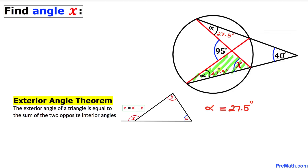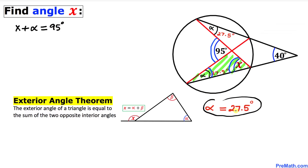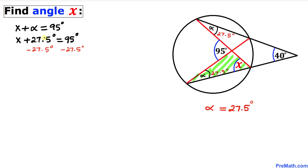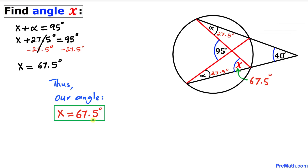Now let's focus on this shaded triangle. This angle is our exterior angle, equal to the sum of the two opposite interior angles alpha and x. Therefore we can write: x plus alpha equals 95 degrees. Since alpha is 27.5 degrees, we get x plus 27.5 degrees equals 95 degrees. Subtracting 27.5 degrees from both sides, x turns out to be 67.5 degrees.